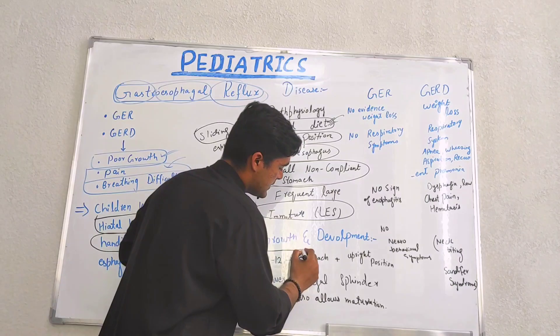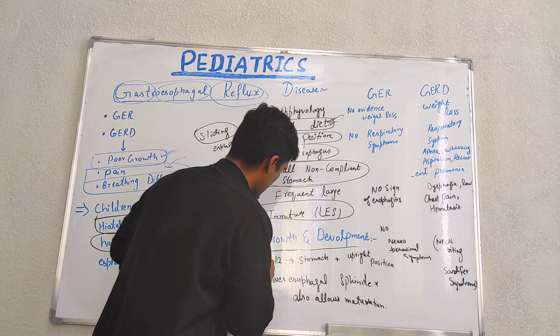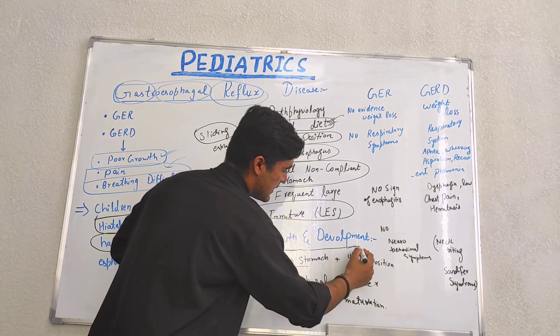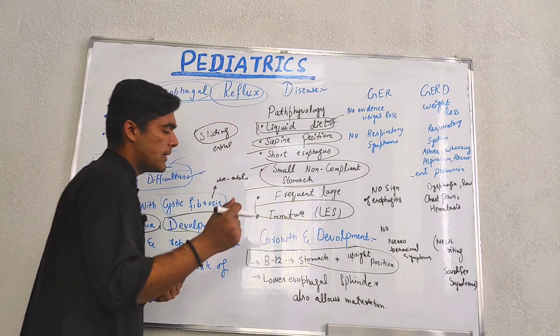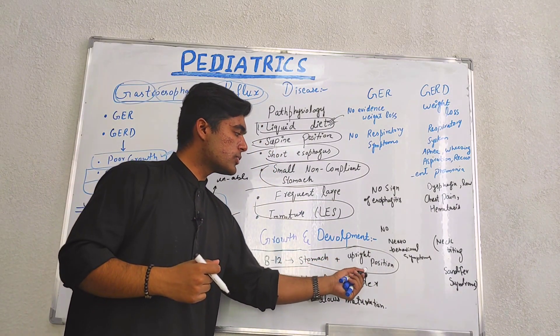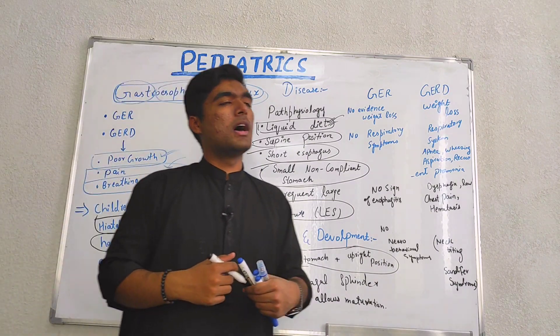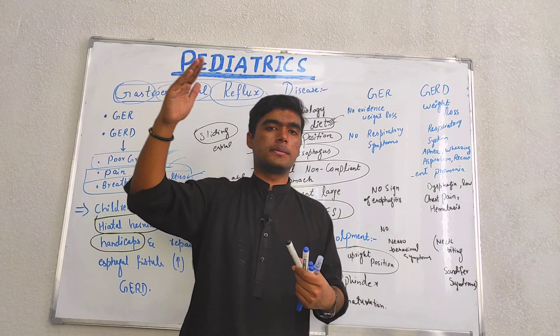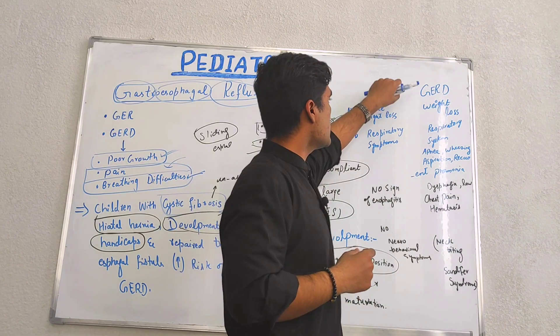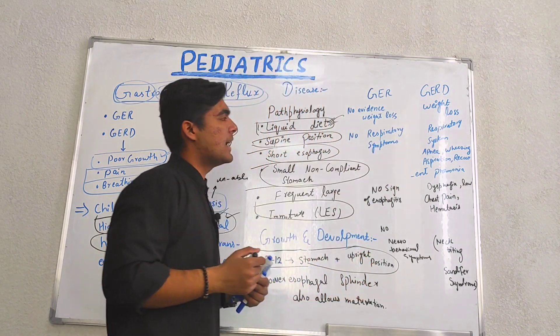Talking about growth and development: when a child starts to develop at 8 to 12 months, the stomach starts developing and maturing. The child often sits in upright position, and the lower esophageal sphincter also starts maturing.